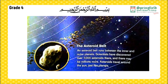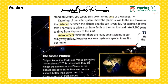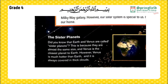Asteroids travel around the Sun just like planets. Did you know that Earth and Venus are called sister planets? This is because they are almost the same size and Venus is the closest planet to Earth. However, Venus is much hotter than Earth and is always covered in thick clouds.